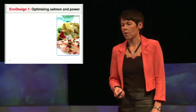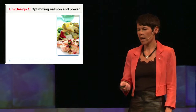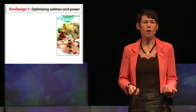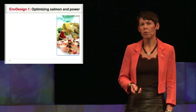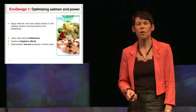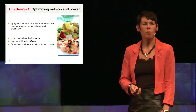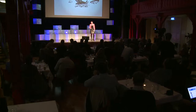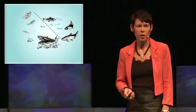Let's go to the river first. You see a meal of salmon. And if you are going to eat salmon like this, you need energy. We have been studying salmon for several years, and now we are trying to apply our knowledge about salmon in regulated rivers. We are looking for bottlenecks in the salmon's life and for better mitigation efforts, trying to get a win-win situation between salmon and energy production. That's the first example of environmental design.